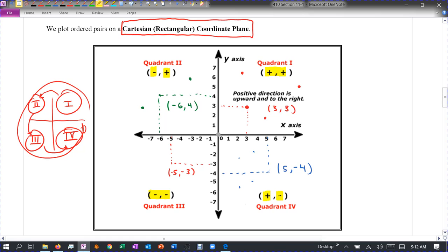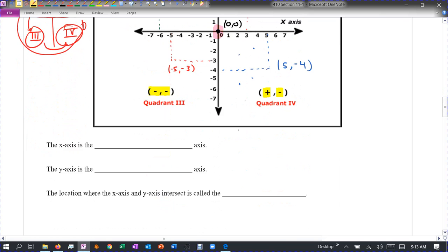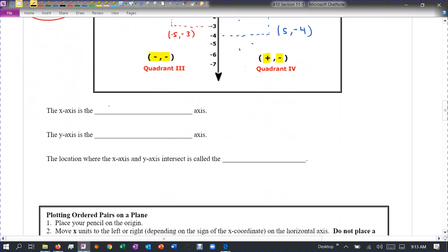So those are kind of some properties of this coordinate system. And then also we have a very special point right here in the middle. We call this the origin, and that's the point zero, zero. So you just don't go anywhere, you just stay there. Okay, so the X axis is the horizontal axis. Y axis is the vertical. And the location where they hit each other is called the origin.